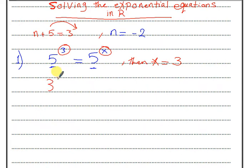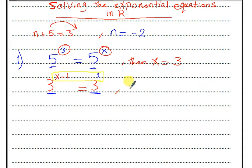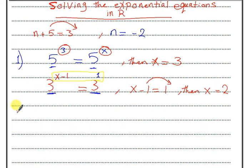Another example: if I have 3 to the power x minus 1 equal 3. The right side is 3 to the power 1. At first, make sure you have the same base — I have the same base here. So the power equals the power: x minus 1 equal 1, then x equal 1 plus 1, equal 2.